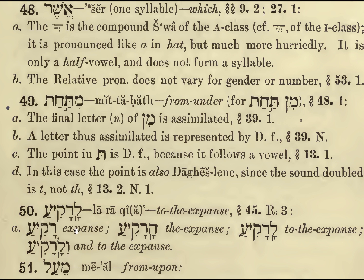LaRaKiang — to the expanse of the firmament. LaRaKiang. So RaKiang: expanse, or firmament, or division, or barrier. HaRaKiang: the expanse. LaRaKiang: to the expanse. And the LaRaKiang — and to the expanse.